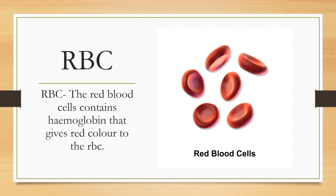Blood cells are of two types: red blood cells and white blood cells. Red blood cells contain the pigment hemoglobin that gives red color to the RBCs and hence the blood. RBCs are the most common type of blood cells and the vertebrate's principal means of delivering oxygen to the body tissues. RBCs take up oxygen in the lungs and release it into tissues while squeezing through the body's capillaries.